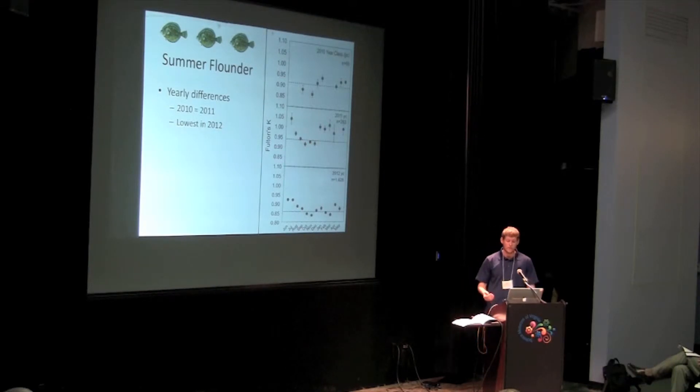However, the condition of flounder in 2012 was statistically lower than the other years, and that's really interesting because 2012 showed us the highest abundance of juvenile summer flounder in the Bay that we've seen since 1994.